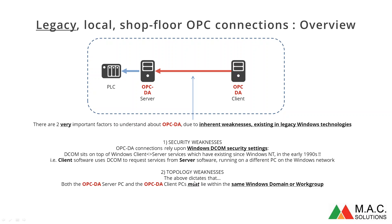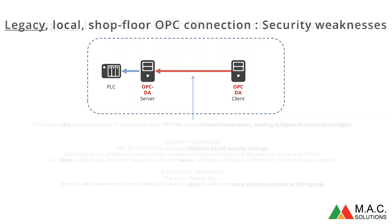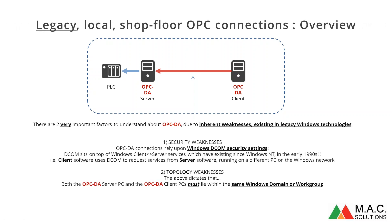The second weakness is the very fact that you're talking about Windows security authentication across a network. Both of these PCs must live within the same domain or workgroup. It's not possible to have these separated by firewalls; it's not possible to have these separated in pretty much any way — they have to be on a flat network. That's the second issue, and I'll highlight both of these in the forthcoming slides.